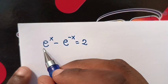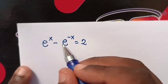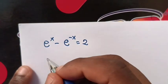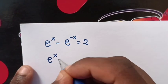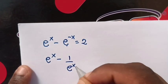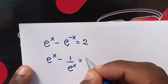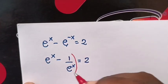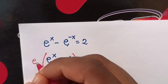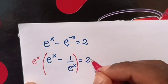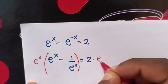Hello. To solve e power x minus e power negative x equals 2, find the value of x. Here it will be e power x minus 1 over e power x equals 2. Then we multiply by e power x on both sides.